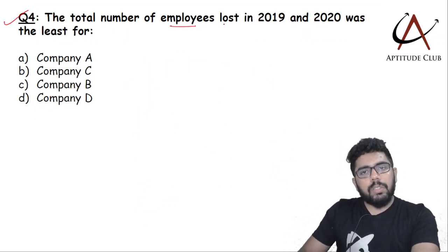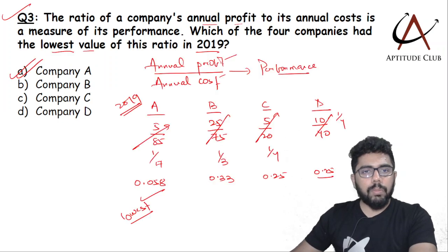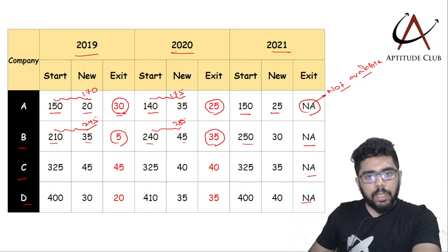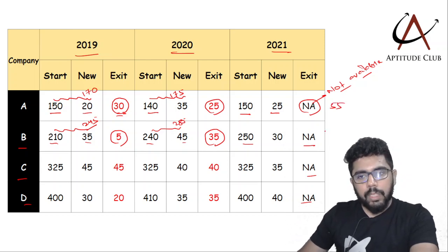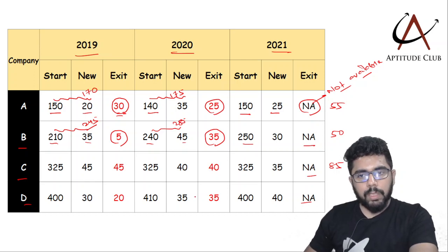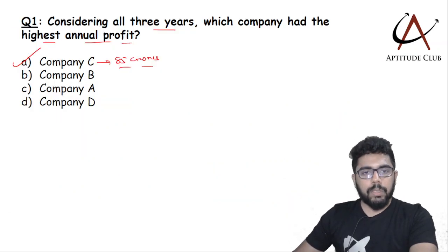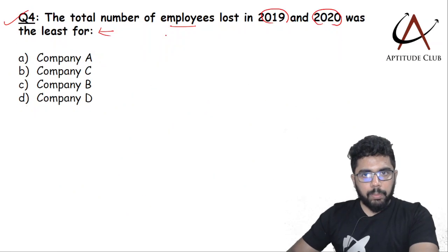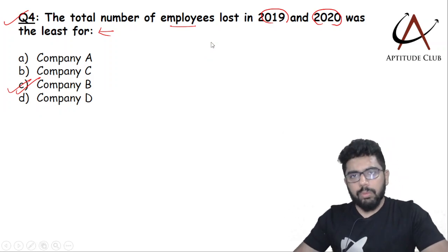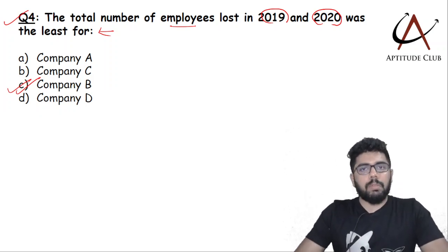Question 4: The total number of employees lost in 2019 and 2020 was the least for which company? From our employee table: A lost 30 + 25 = 55; B lost 5 + 35 = 40 — wait, looking at the figures: B totals 20 + 35 = around 50; C totals the highest at 85; and the least is company B. So the answer is company B had the least number of employees exit in 2019 and 2020.